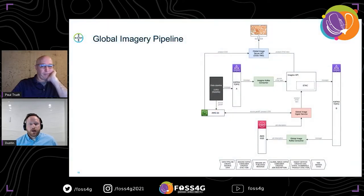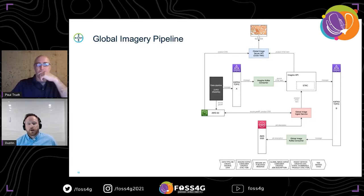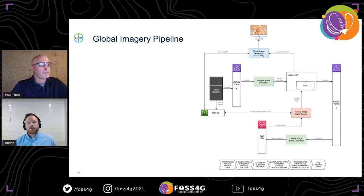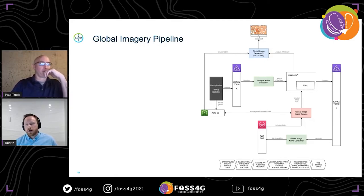As Paul mentioned, he talked a bit about the image catalog. What I wanted to dig into specifically is the global imagery pipeline — a piece we worked on alongside the Bayer Crop Science team. Here's an overview diagram of the global imagery pipeline, which roughly represents the different services and how data flows within the pipeline. Some of the goals were to gather and store image metadata in a STAC catalog, create cloud-optimized geospatial images or COGs, and ultimately make the images more discoverable and allow for efficiencies by other systems fetching these images.